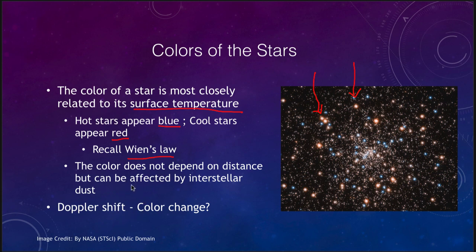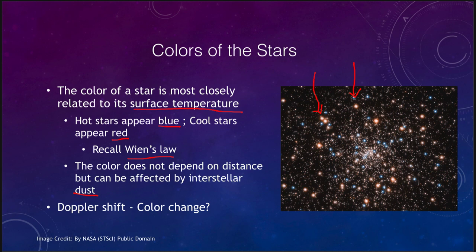The color of a star does not depend on distance, so it helps us learn about stars regardless of how far away they are. However, it is affected by dust. Dust is very good at absorbing short wavelengths of light — the bluer light — so if a star's light is coming through a lot of dust, it can look significantly redder than it otherwise would. A red star could actually be a bluer star whose light has passed through lots of dust on the way to Earth, something astronomers must consider when measuring individual stars.